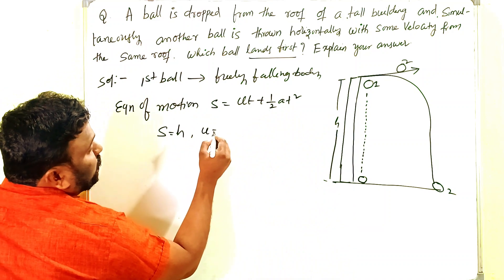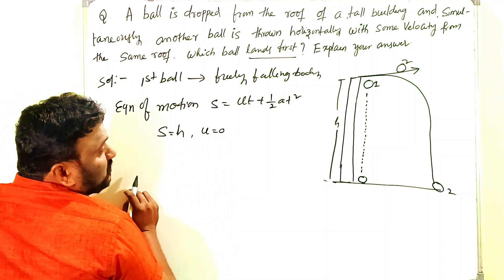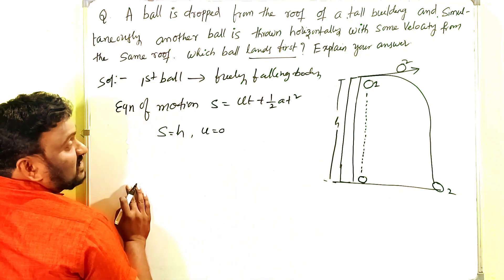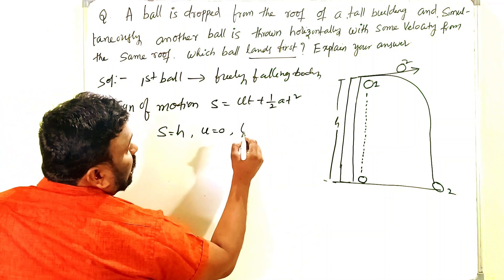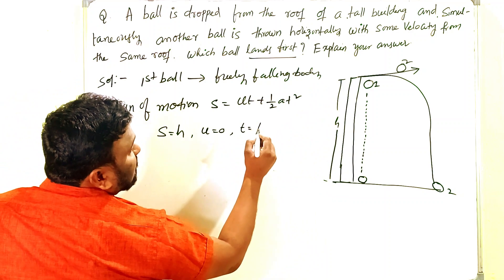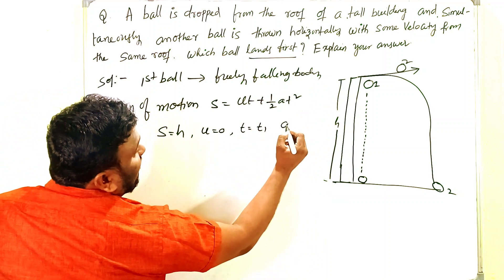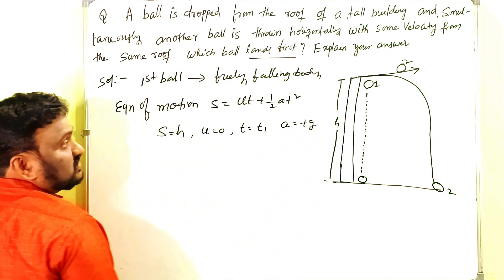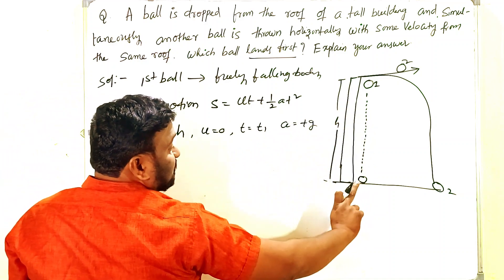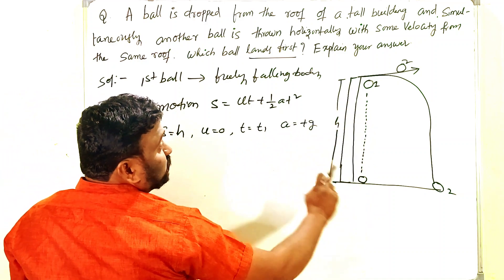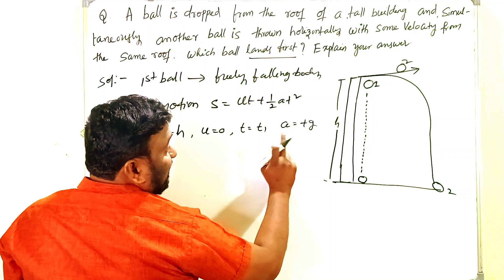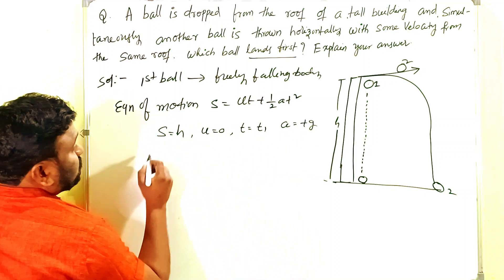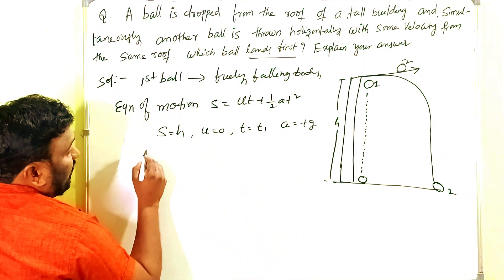u = 0, because for a freely falling body the initial velocity is zero. We take t = t₁ and a = +g, because the body is moving in the direction of gravitational force.